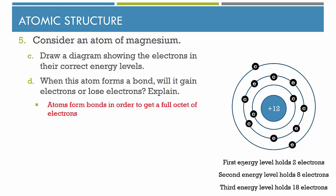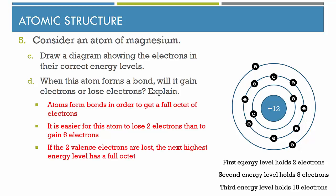When this atom forms a bond, will it gain or lose electrons? First, magnesium is a metal, and metals lose electrons. Atoms form chemical bonds to get a full octet of electrons — either by sharing electrons in a covalent bond or transferring electrons in an ionic bond. This atom has 2 valence electrons, so it's easier to lose 2 than to gain 6. If it loses those 2 outer valence electrons, the next highest energy level is energy level 2, which has 8 electrons — a full octet. So by losing those 2 outer electrons, the atom achieves a full octet.